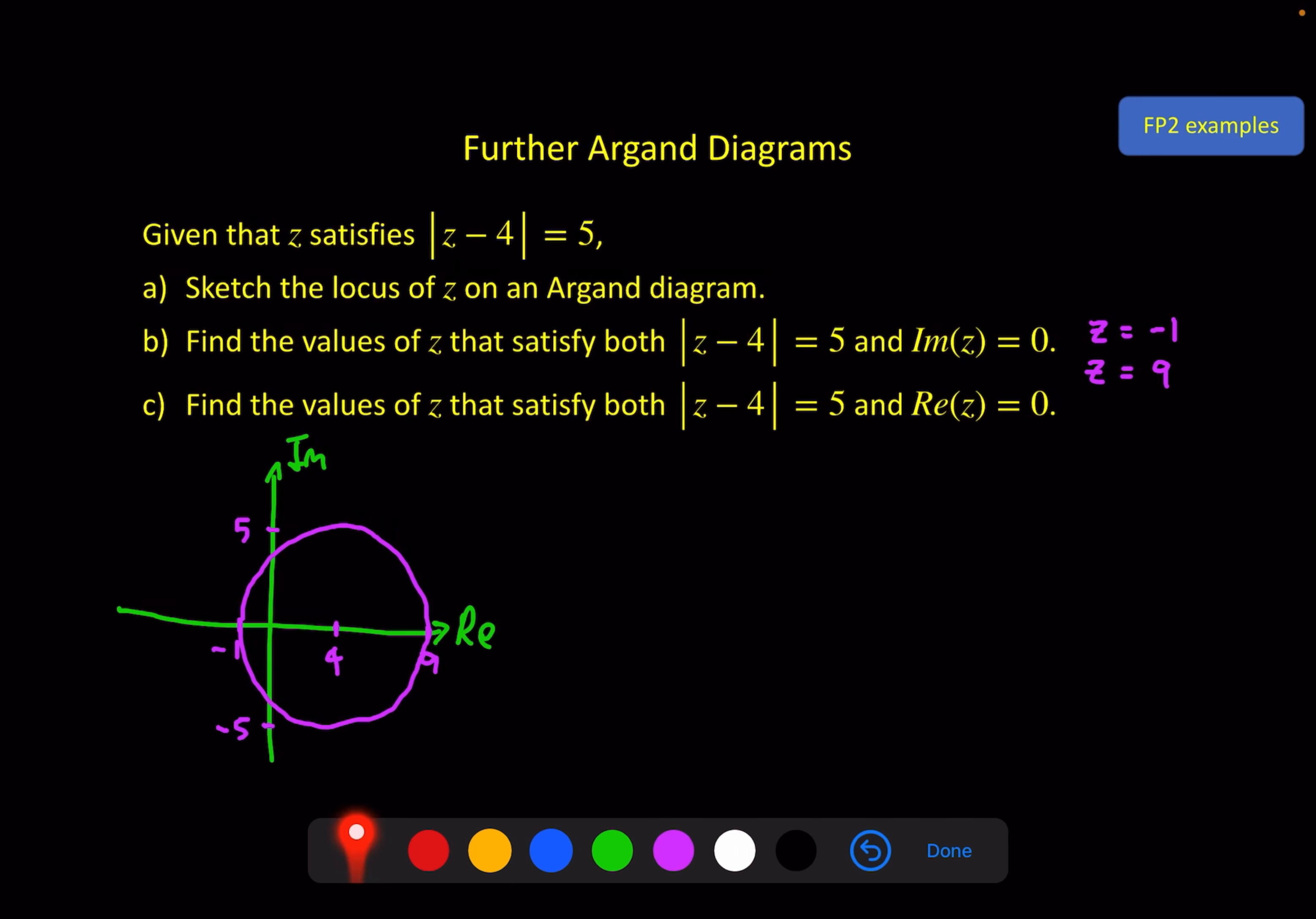Part c is very similar. Find the values of z that satisfy both this, so it's on the locus again, and the real part of z equals 0, so where it crosses the imaginary axis. Not quite so straightforward. It's here and here. This is where our problem solving comes in, because we know that the radius of the circle is 5. So I know this distance is 5, and of course from 0 to 4 is 4 units.